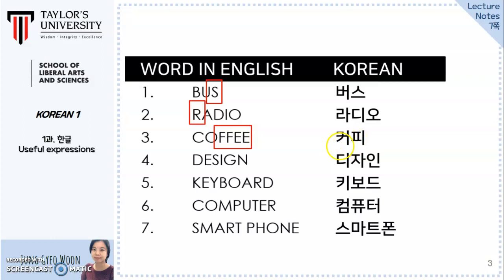Number four: Design. The word design in Korean has three syllables. The vowel I is reflected here and they separate the sound into two parts — JA-IN. So it becomes DI-JA-IN.